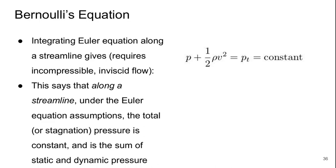Finally, if we take the Euler equation and we integrate it along a streamline, which requires incompressible inviscid flow, we get Bernoulli's equation, which essentially says that the pressure plus 1 half times rho times the velocity squared is a constant. And that constant is what we call Pt, the stagnation pressure. And this says that along a streamline under the Euler equation assumptions, the total or stagnation pressure is constant and is the sum of the static and dynamic pressures.